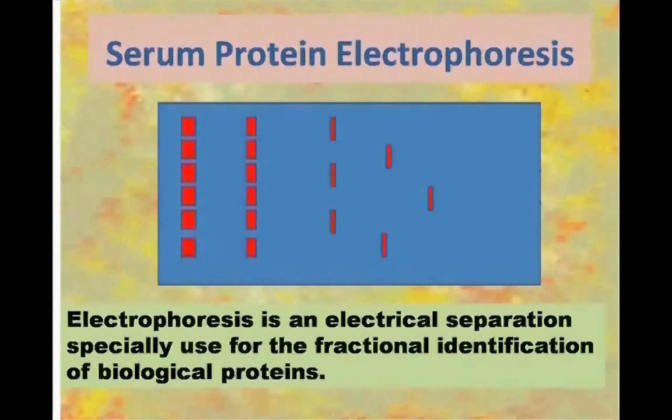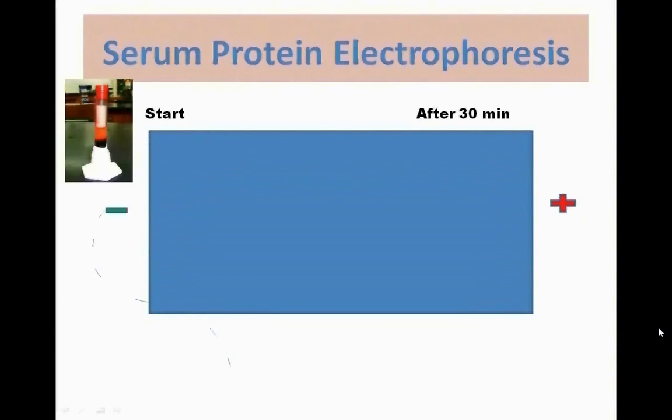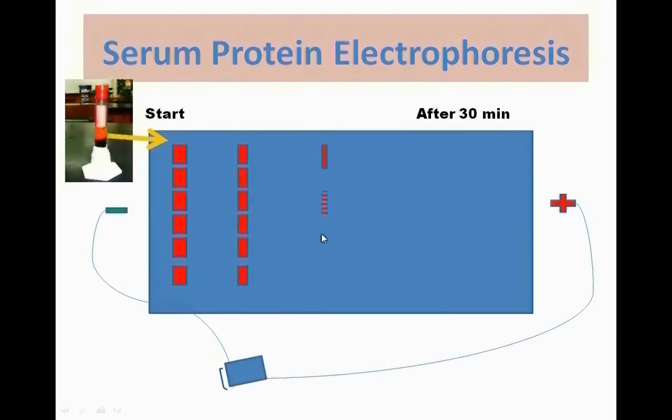Serum protein electrophoresis. Electrophoresis is an electrical separation specially used for the fractional identification of biological proteins. It is based on the movement of charged or ionized colloidal particles in an electrical field in the direction of an electrode of opposite charge. When you use the serum as a source of protein, the technique is known as serum protein electrophoresis.